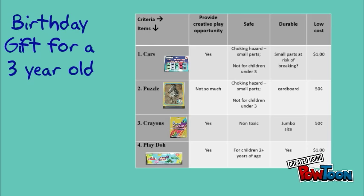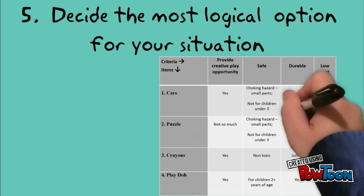The fifth step is deciding the most logical option for your situation. Here we see how Joey ranked the birthday gift options.